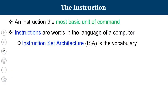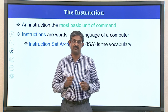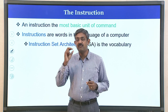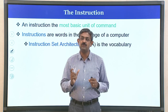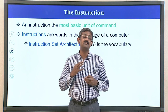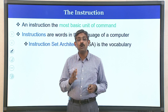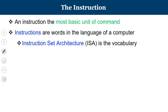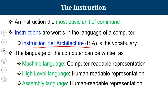Let us understand what an instruction is and what we mean by instruction set architecture. An instruction is the most basic unit of command. If you want the computer to perform a task, that fundamental task is an instruction whose execution happens with the help of various special registers inside your microprocessor. Instructions are typically words in the language of a computer, and the instruction set architecture is the vocabulary being used. If you want to communicate a task to a computer, it must be represented as an instruction, and these instructions are made up of standard rules.